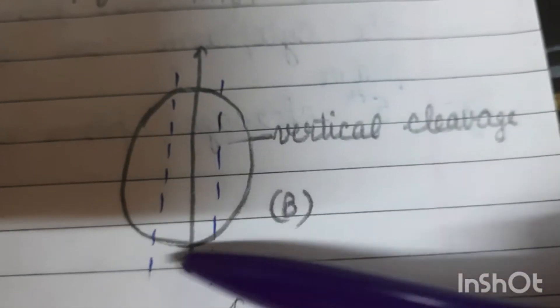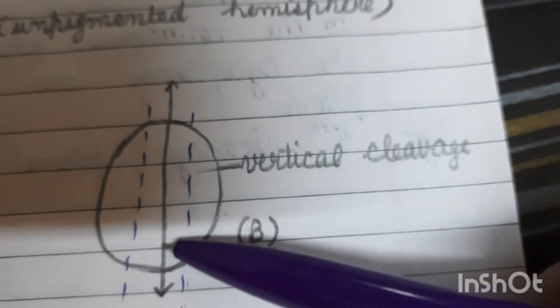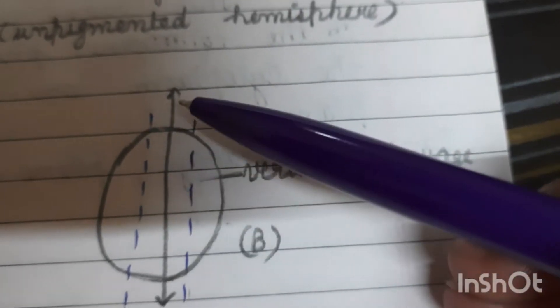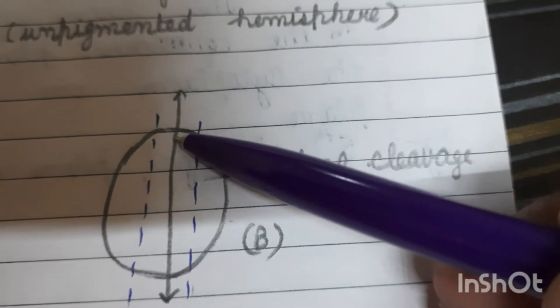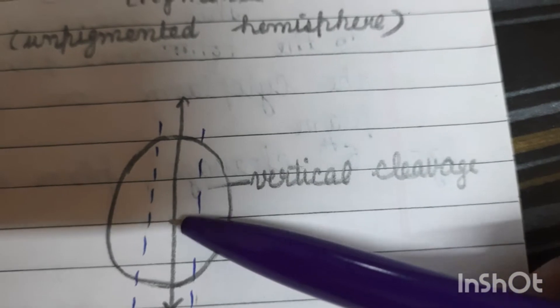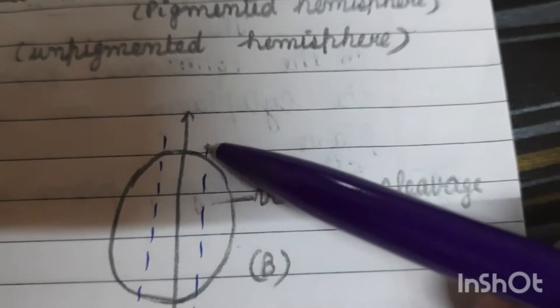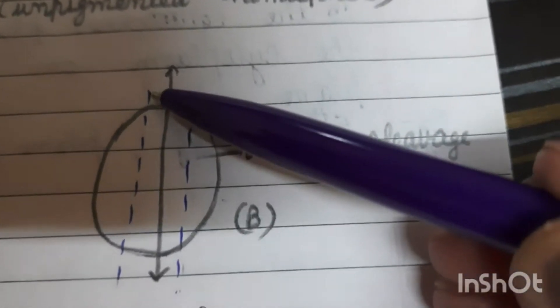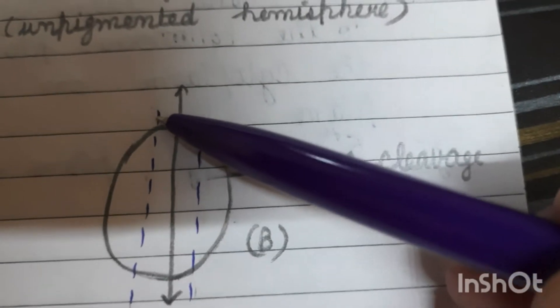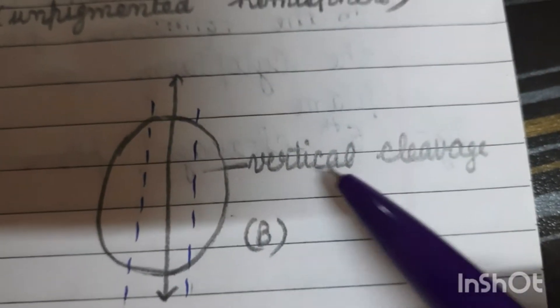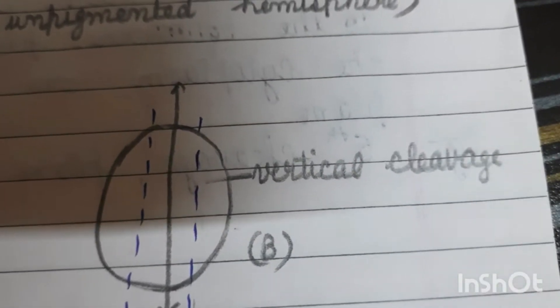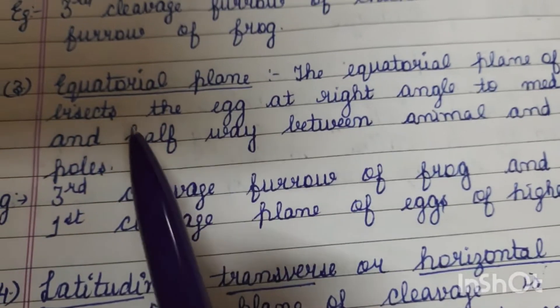Looking at the diagram — this is the zygote, this is the animal pole, and this is the vegetal pole. The cleavage will not pass through the center like the meridional plane; instead it will pass through the left side or the right side, dividing the zygote. This type of cleavage is vertical cleavage.